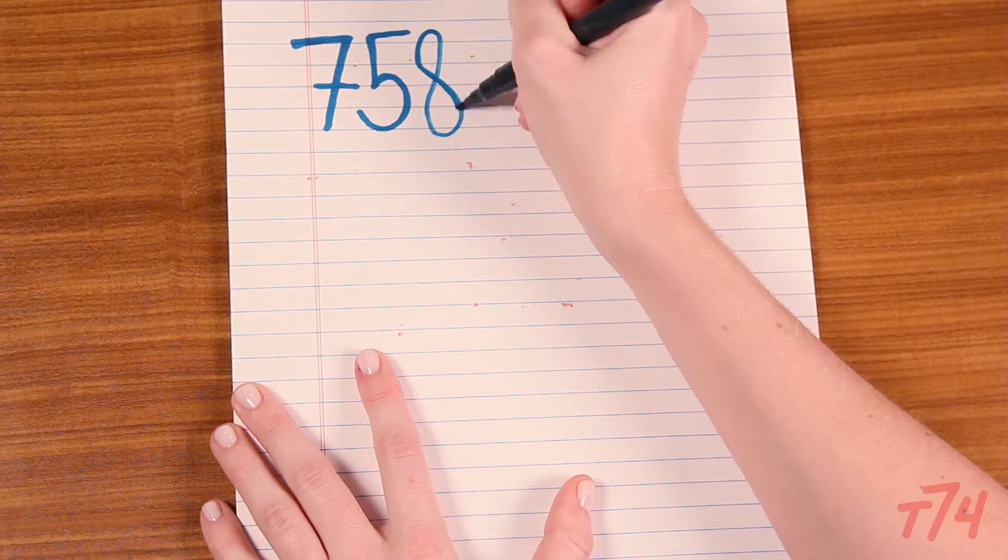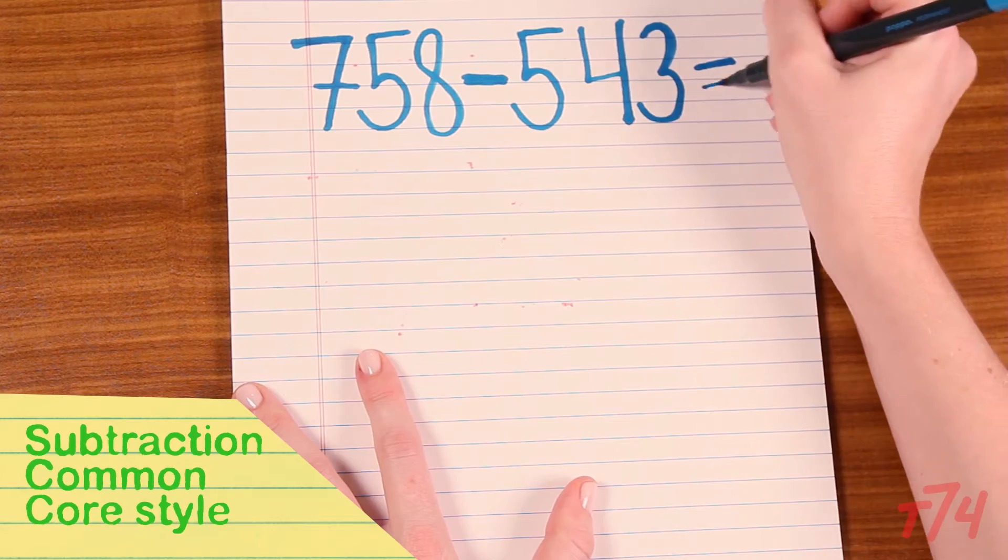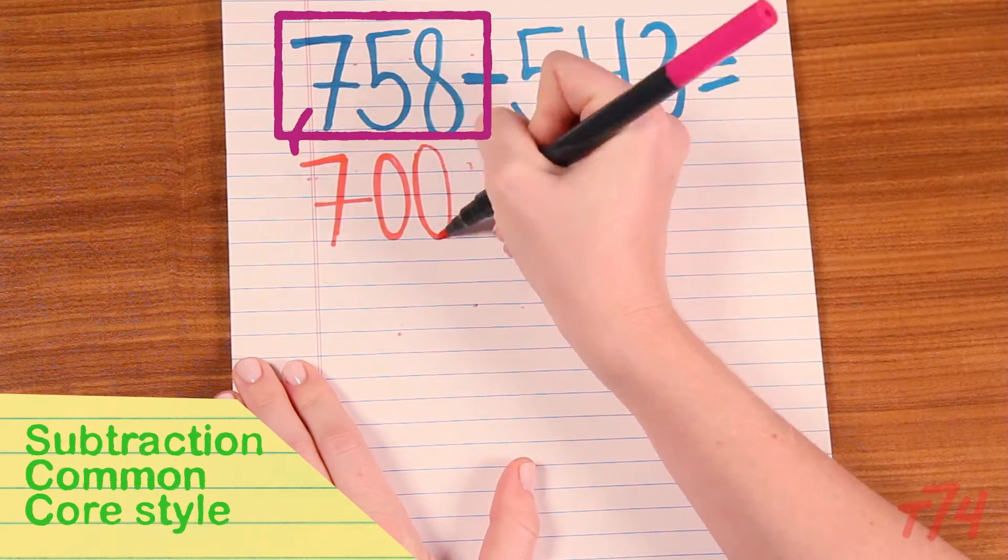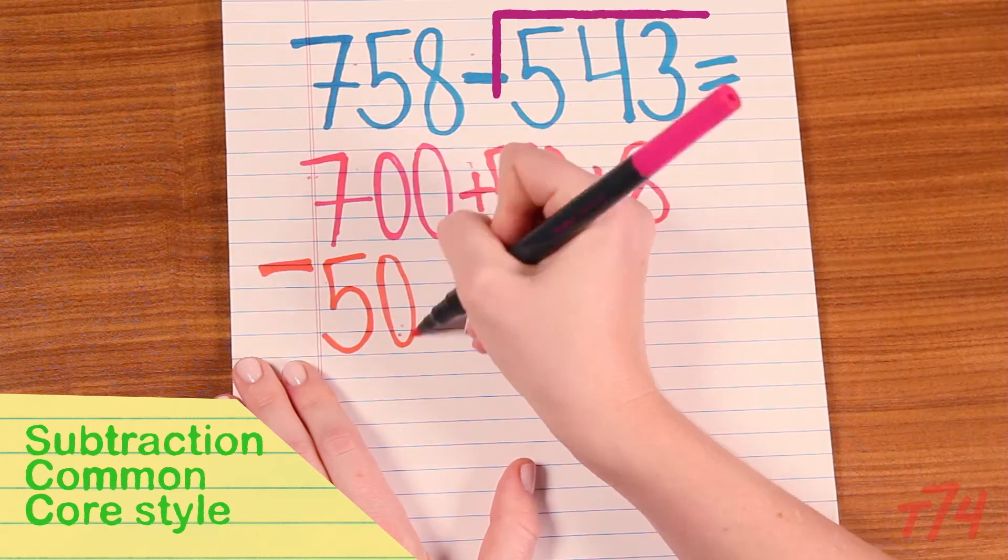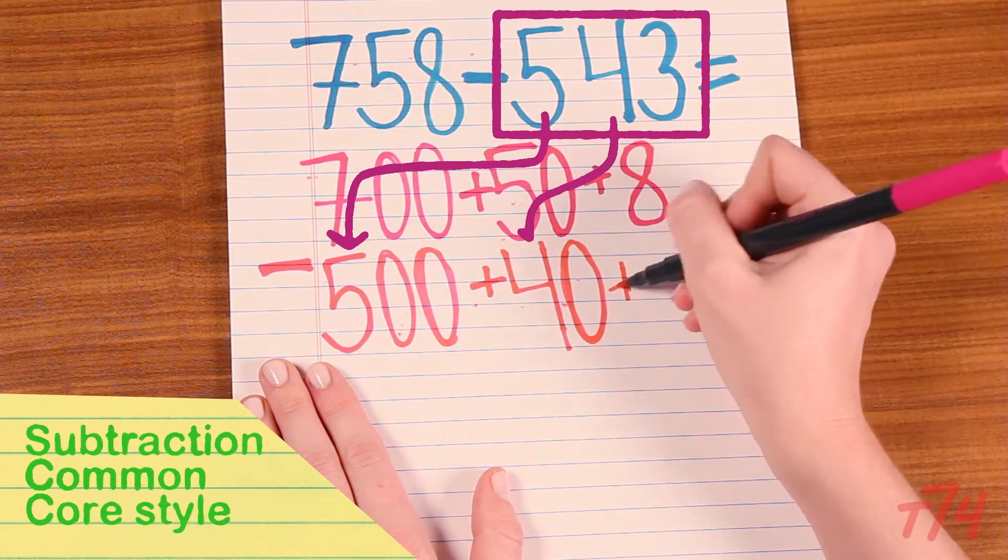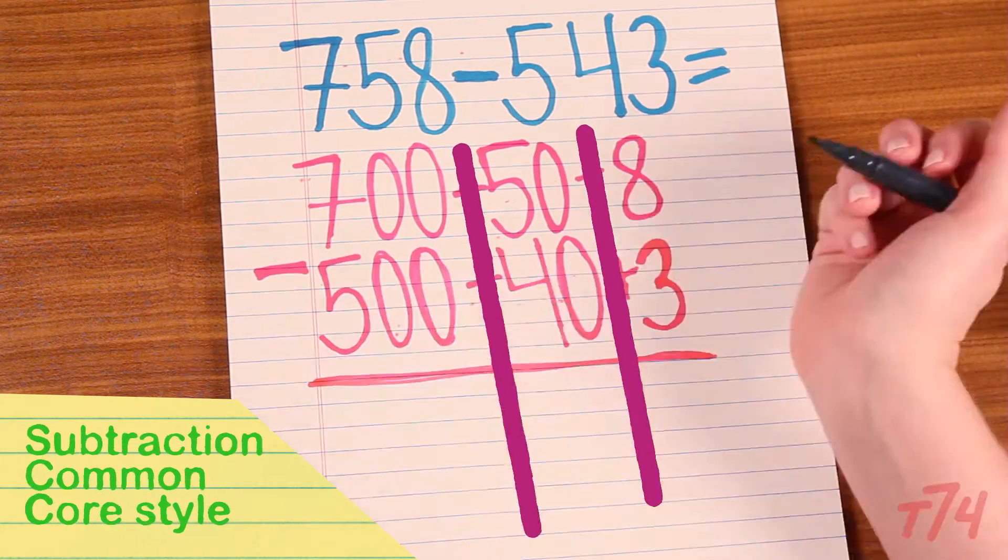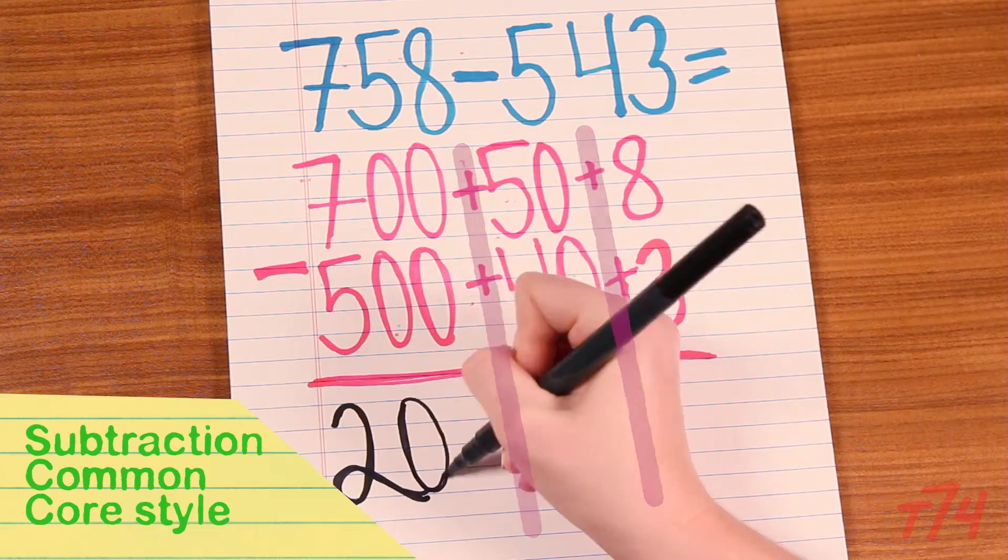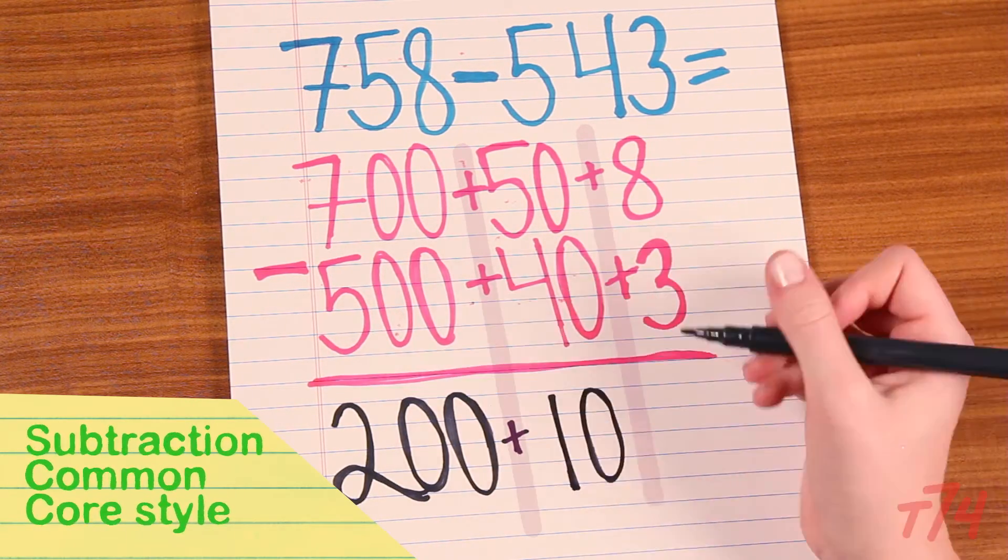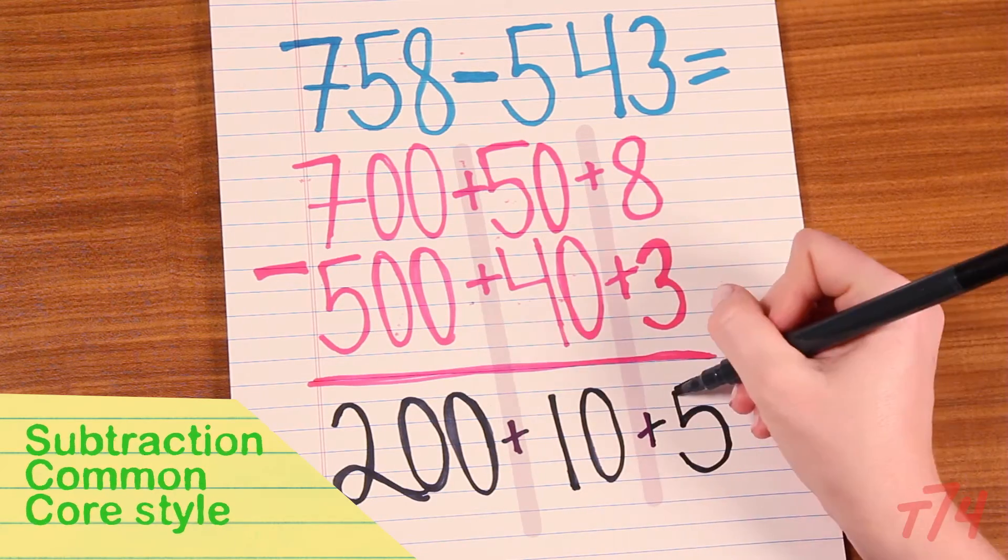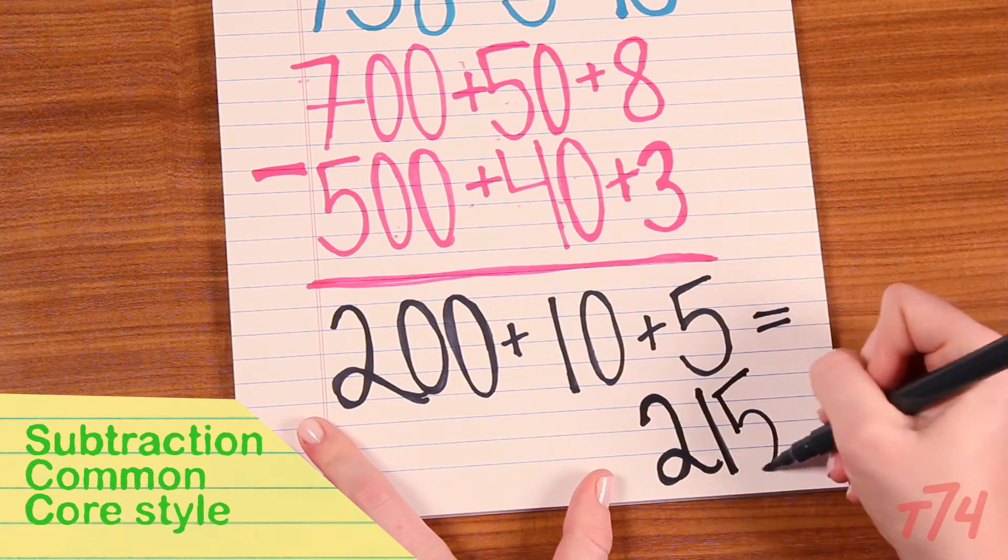So if I do the subtraction based on place value and how you pull that number apart, it would look like this: 700 plus 50 plus 8, do the same for the second number, 500 plus 40 plus 3. And then this time I'm subtracting: 700 minus 500, that's 200. 50 minus 40 is 10. 8 minus 3 is 5. Then I can compose that number back together and see that it's 215.